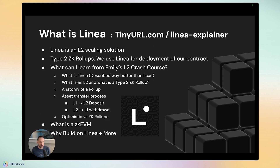Type 1 is fully Ethereum equivalent. Linea is a Type 2. If you want to learn more about Linea, check out Emily Lin's crash course explainer — the link is up in the top right. You might also want to look into the different types of ZK EVMs, specifically Type 2. All the docs are at linea.build. If you have any questions, the Developer Relations team — myself, Emily, or anyone at ConsenSys or MetaMask — is your front door.